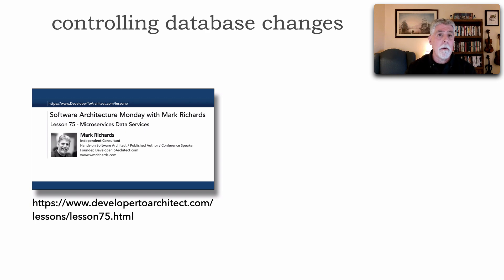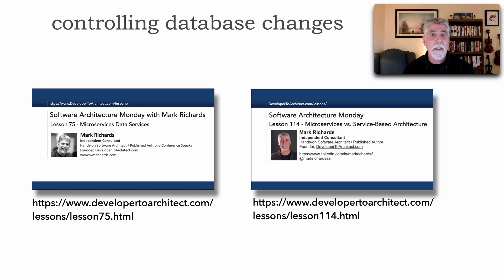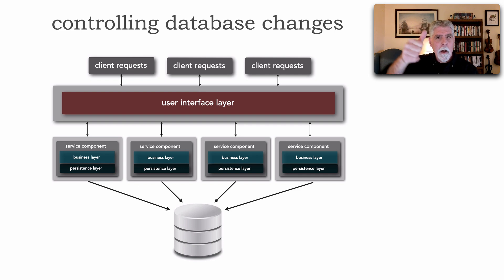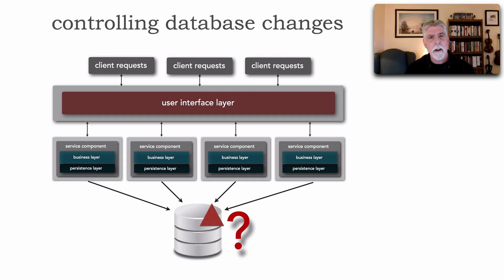I'm going to show you how to control change in another architecture style — a distributed architecture that does use shared data, which happens to be service-based architecture. I did do a lesson 114, where I outlined the differences between microservices and service-based, so you can take a look at that video. With service-based architecture, we have a user interface — usually broken up, but here I'm showing it unified — and we have domain services. All of these services are sharing the same data, which is very convenient because unlike microservices, we're not required to break apart our monolithic data.